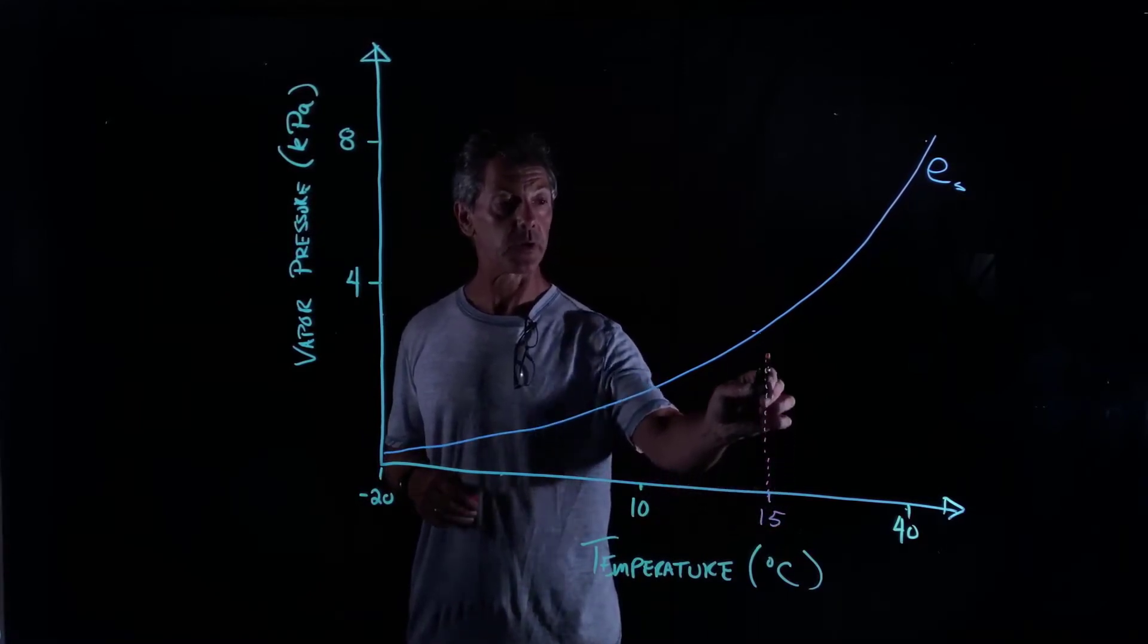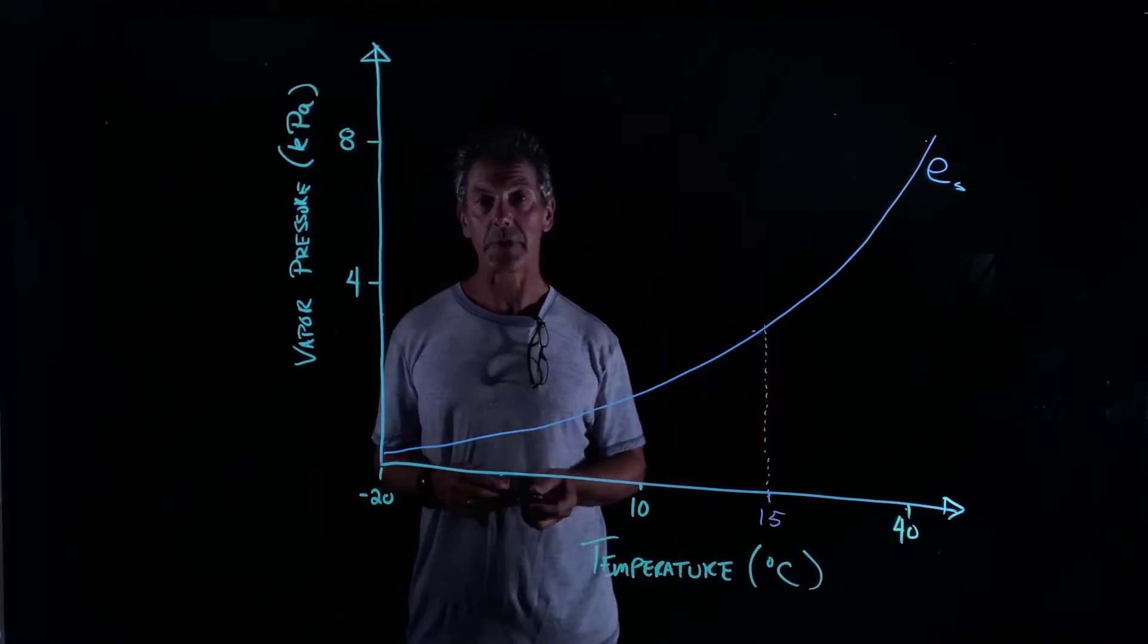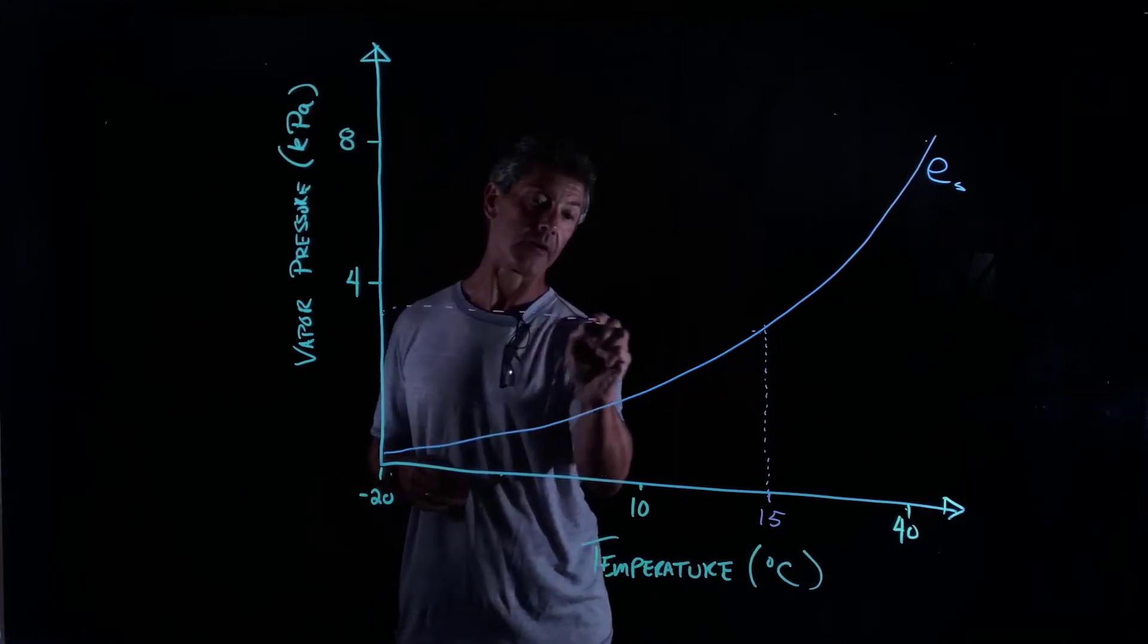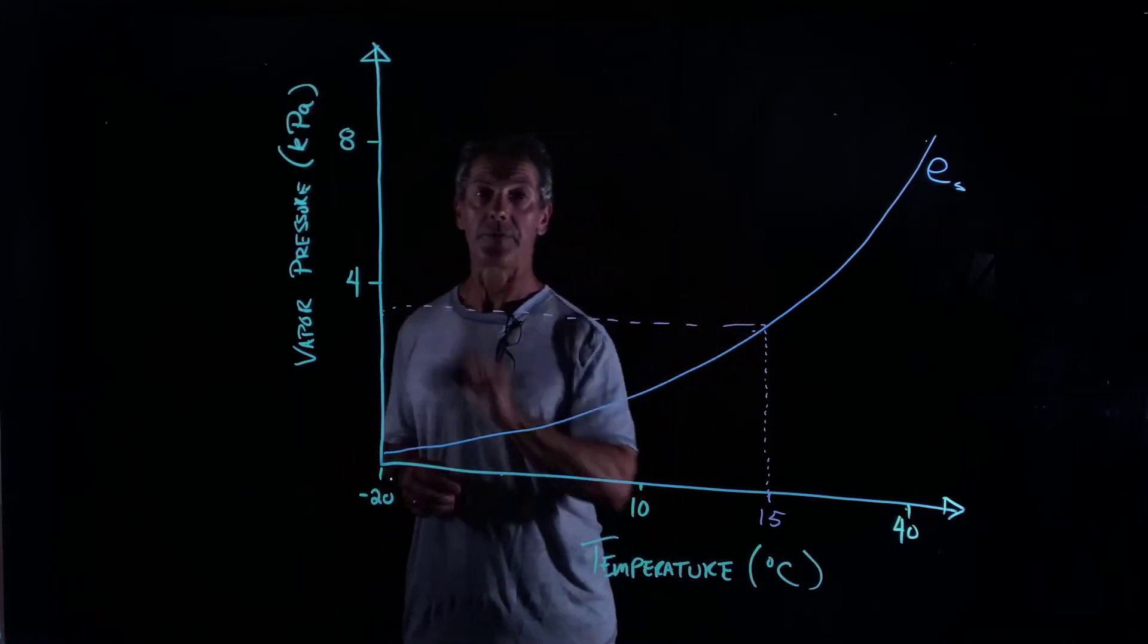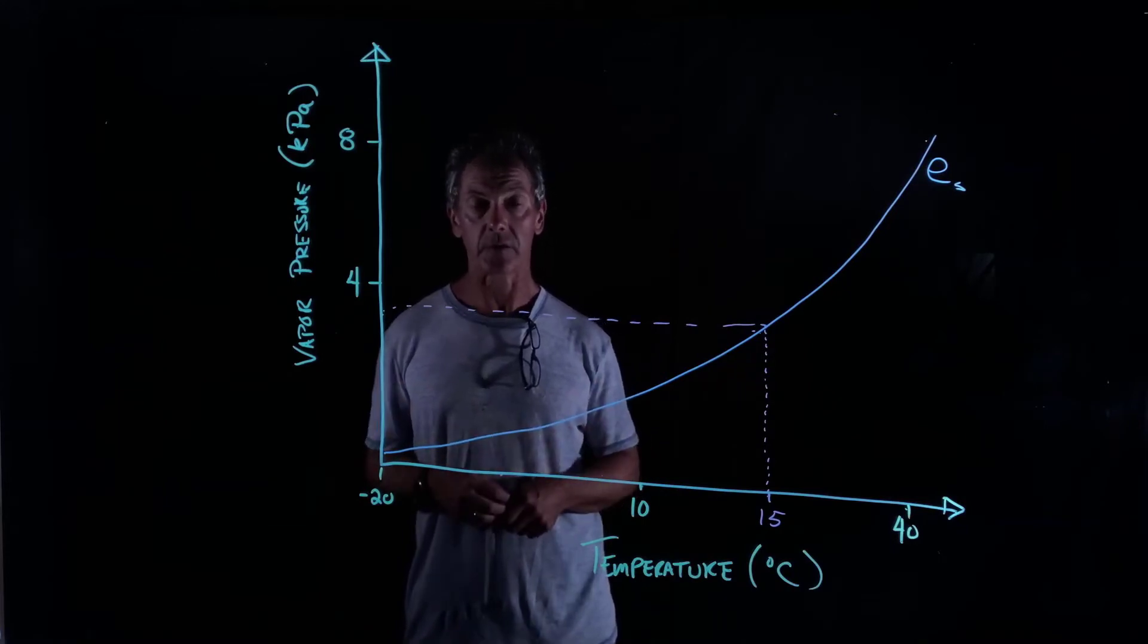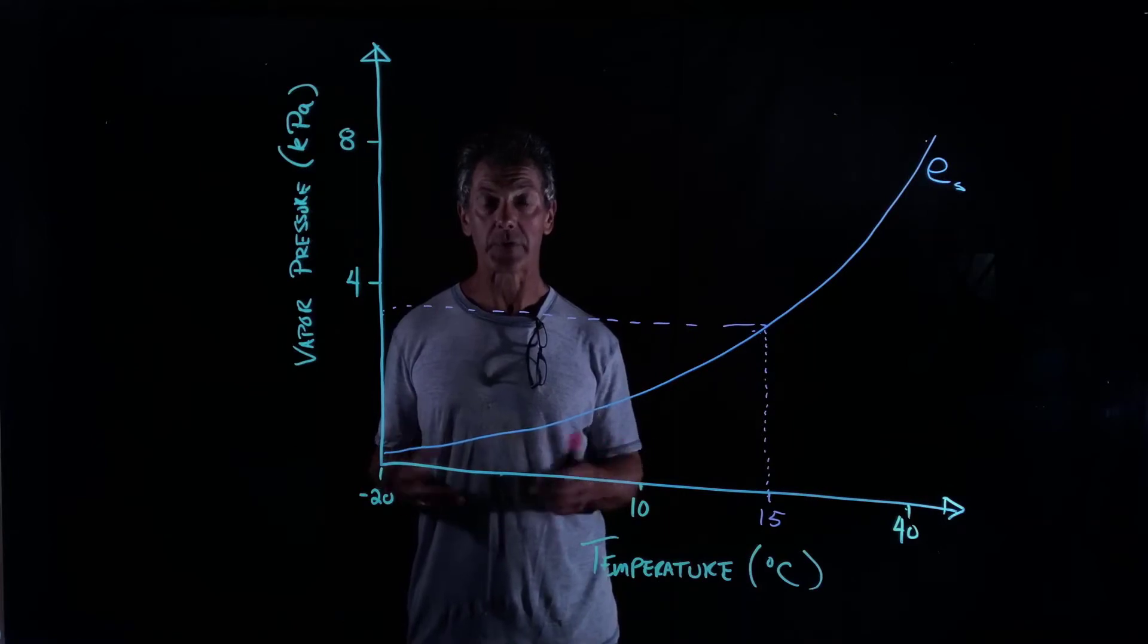How much water can we hold in the atmosphere? Well, we simply go up to here, and that tells us the maximum vapor pressure that we can hold in the atmosphere. We do that by coming over here on the graph, and we find that it's a little under 4 kilopascal, or 4,000 pascal, is the partial pressure of vapor that we can hold in the air.